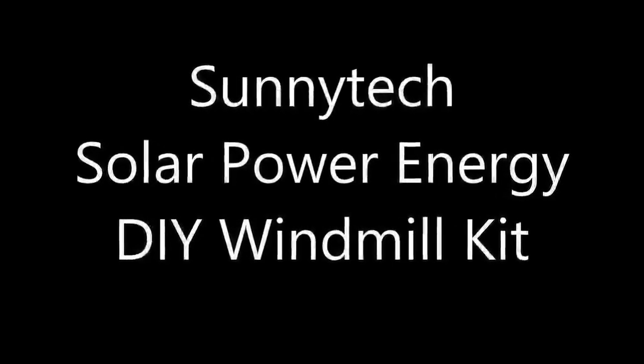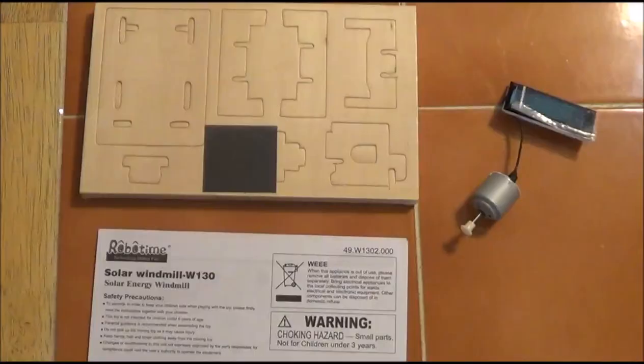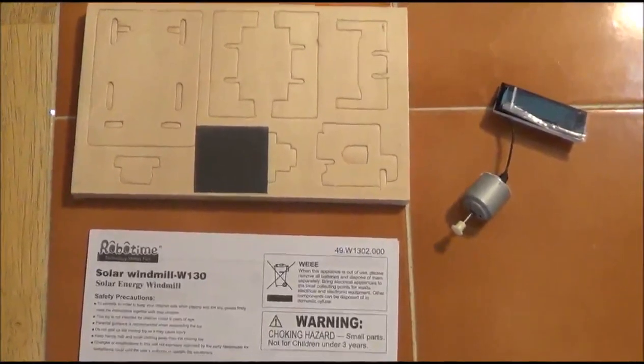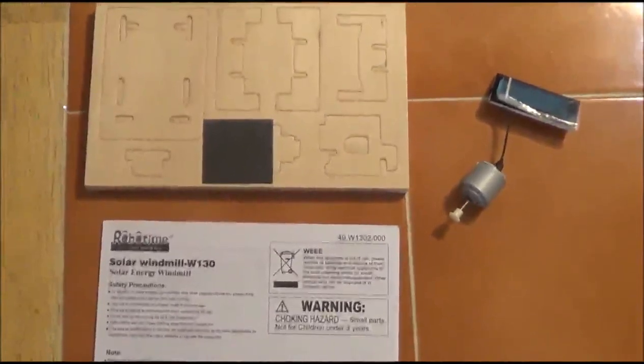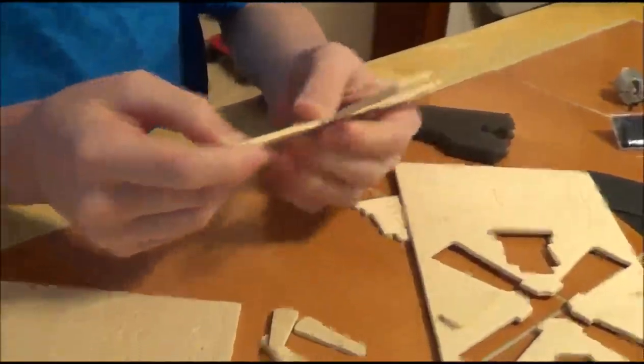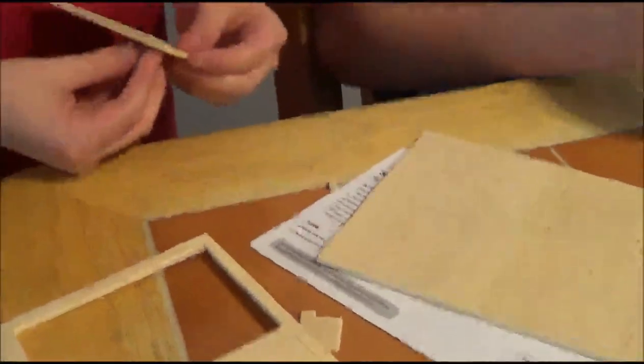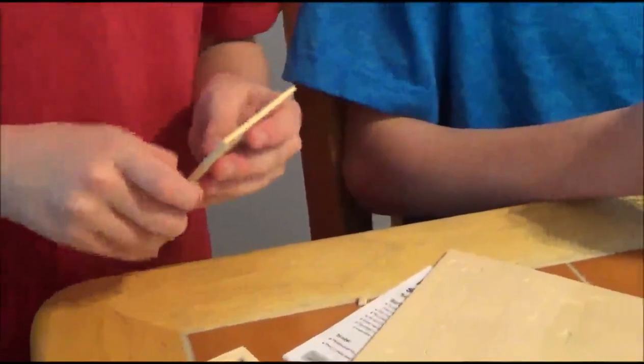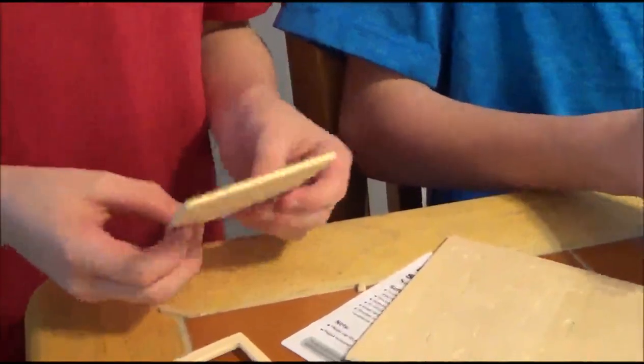This is my review for the Sunny Tech Solar Power Energy DIY Windmill Kit. This is basically a 3D wooden jigsaw puzzle toy with a little added bonus. It comes with four sheets of wooden pieces that you punch out, and they're very easy to punch out. It also comes with a couple of small pieces of sandpaper and a little solar panel.